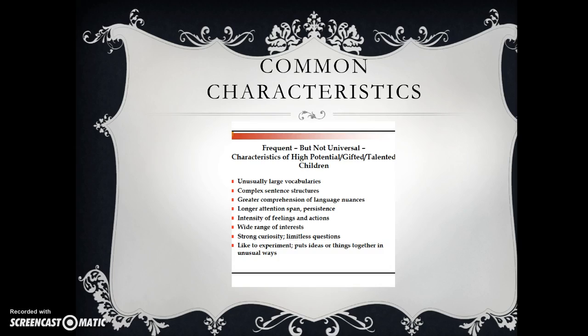Children who might be identified as potentially gifted oftentimes have much larger vocabularies than the average child. They'll talk a little differently — longer sentences. They might be more persistent in various things than others. You might notice wide ranges of excitement, and then a lack of excitement when they're bored. They might have a strong curiosity and challenge you. And they might be thinking or putting things together differently than other children.